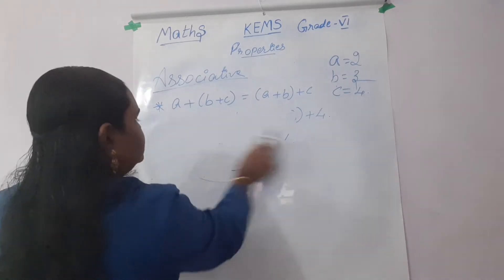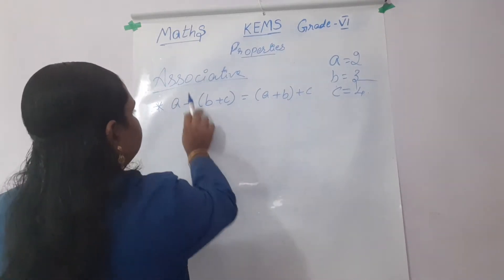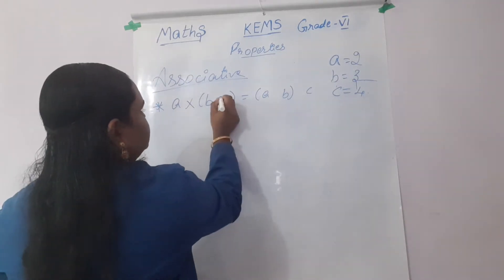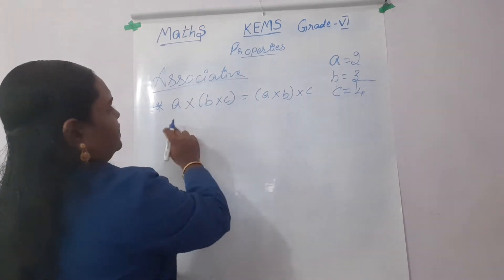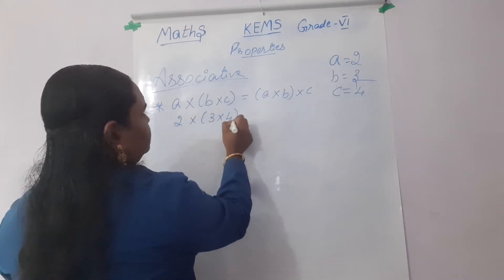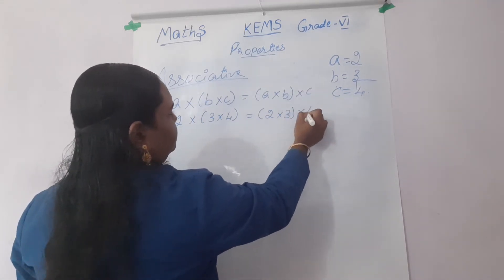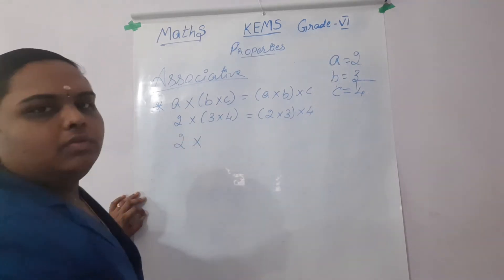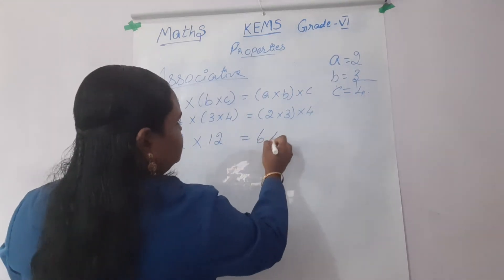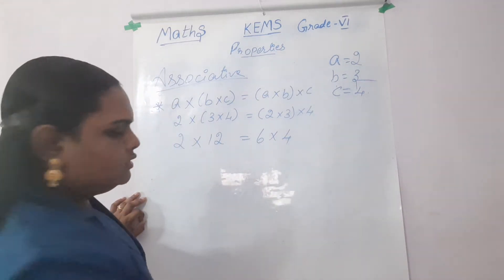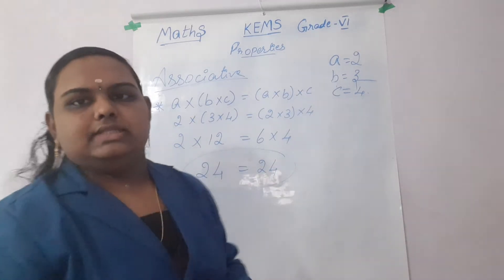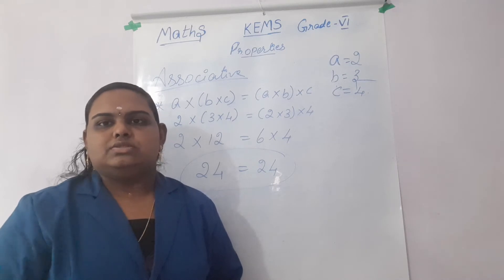Let's check the conditions for multiplication. If we get the same answer like this, then we can say it is closed under multiplication. I am just changing the symbol. 2 into 3 into 4 is equal to A into B into C, that is 2 into 3 into 4. First: 3 into 4 is equal to 12. Then 3 twos are 6; 6 into 4 — 6 fours are 24. And 12 into 2 is equal to 24. So the answer is equal. The associative property is closed under multiplication.